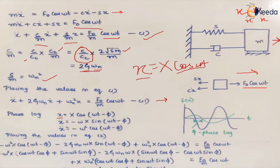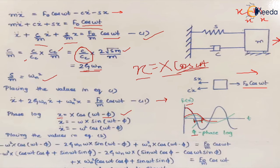When damping is present, the phase of displacement and force may differ even though the harmonic function remains the same — there may be a phase lag. The phase difference describes the offset between two alternating quantities. Since force leads and displacement follows, we define displacement as x = X·cos(ωt − φ), where φ is the phase lag.